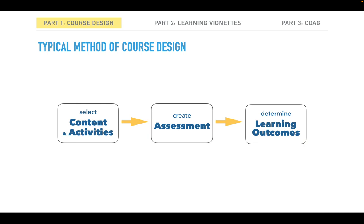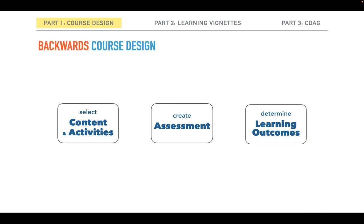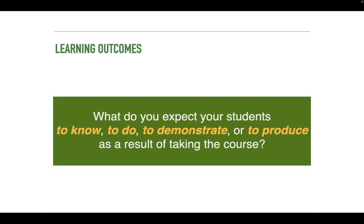However, the approach called backwards course design proposes a reversal of this direction. Rather than starting with a bunch of material for students to learn, backwards course design suggests instructors start with the goals of the course — what do we want students to leave our class having learned? In case the term learning outcome is new to you, it basically means what do you expect your students to know, to do, to demonstrate, or to produce as a result of taking the course — in other words, what will be the outcome of taking your course?